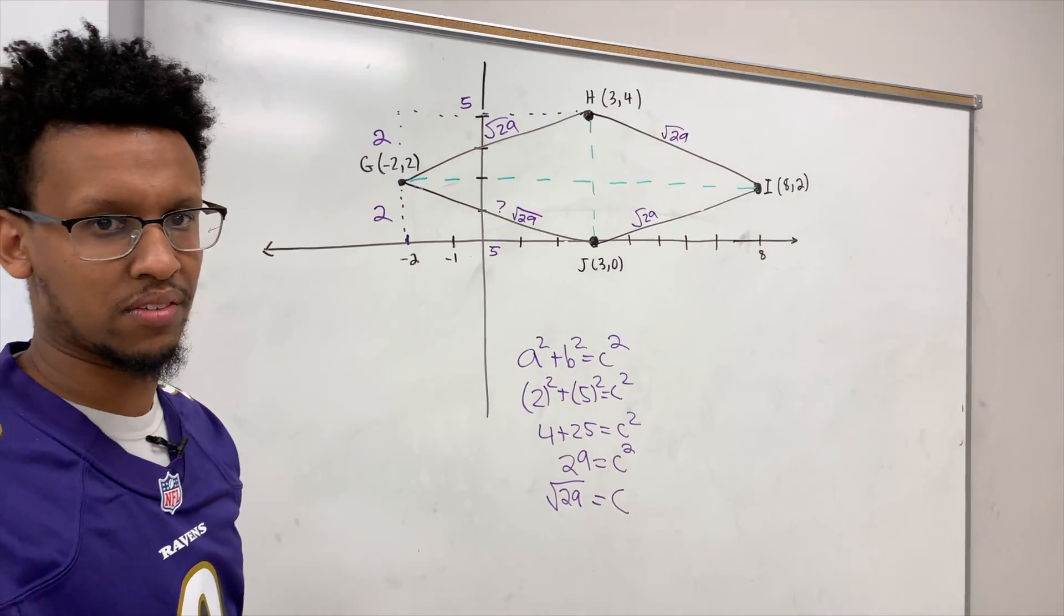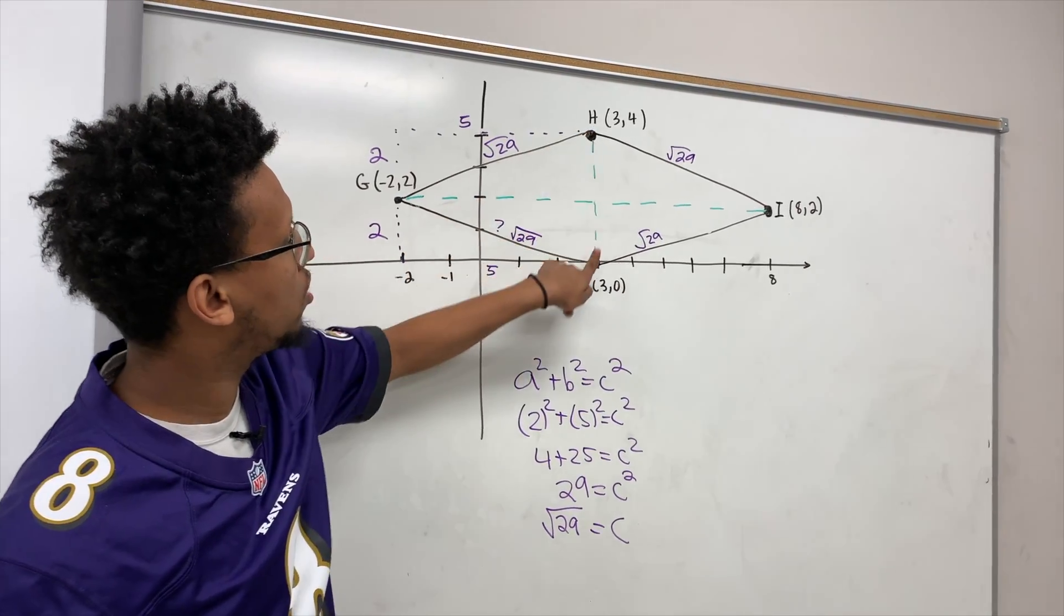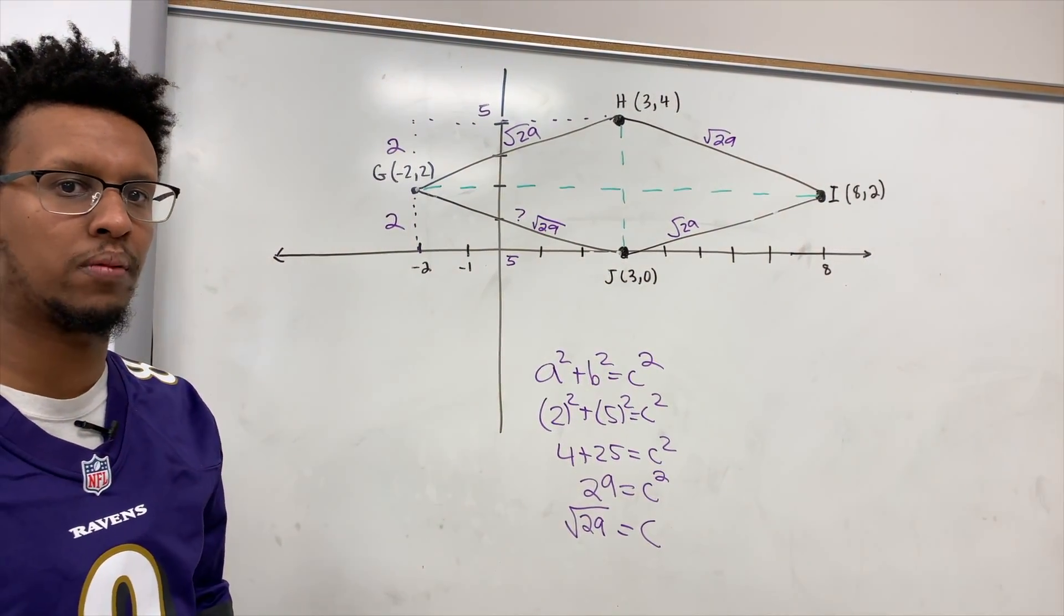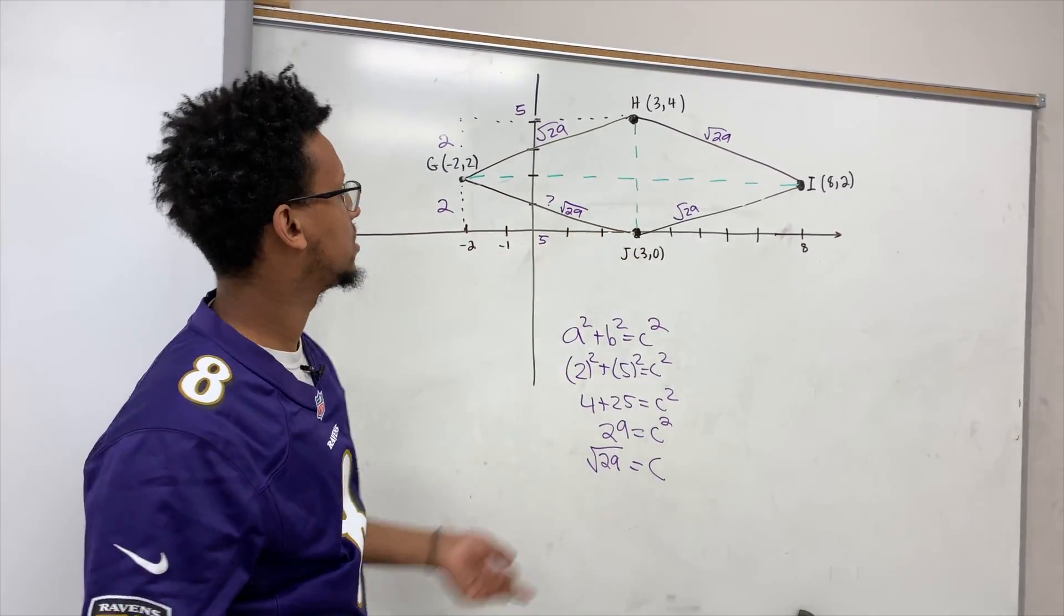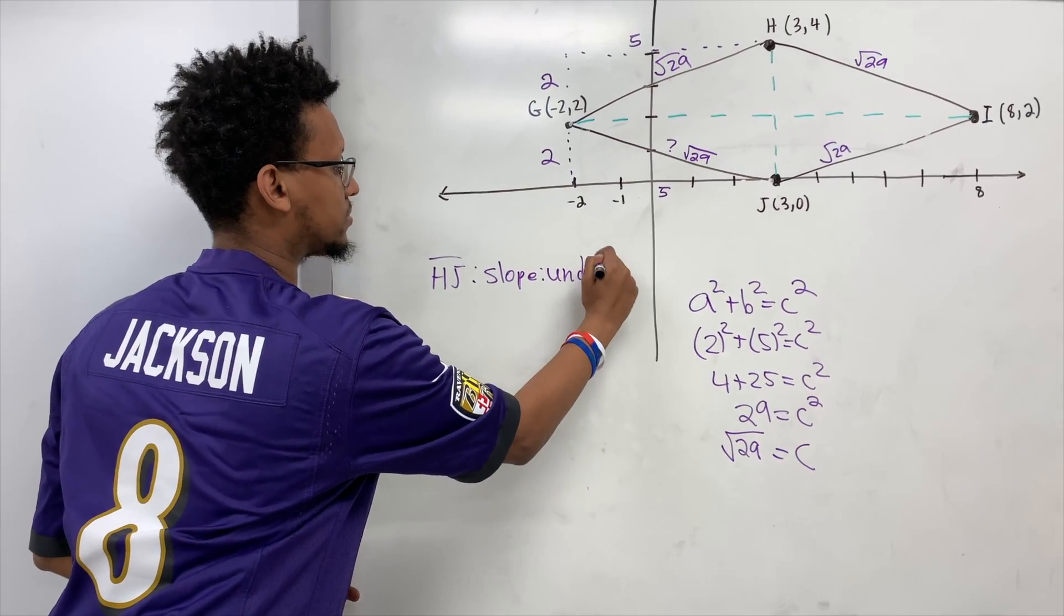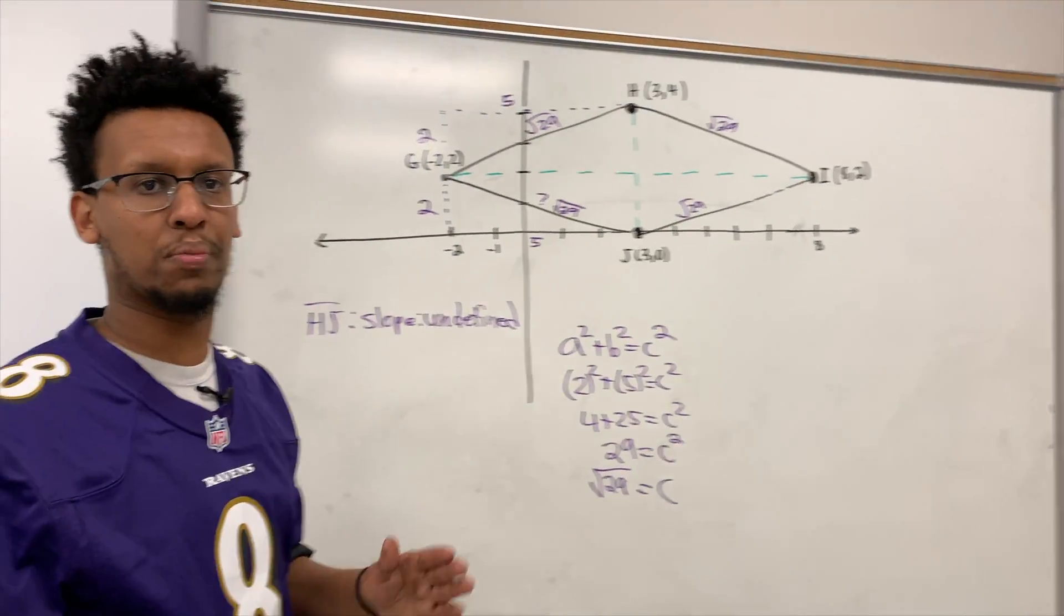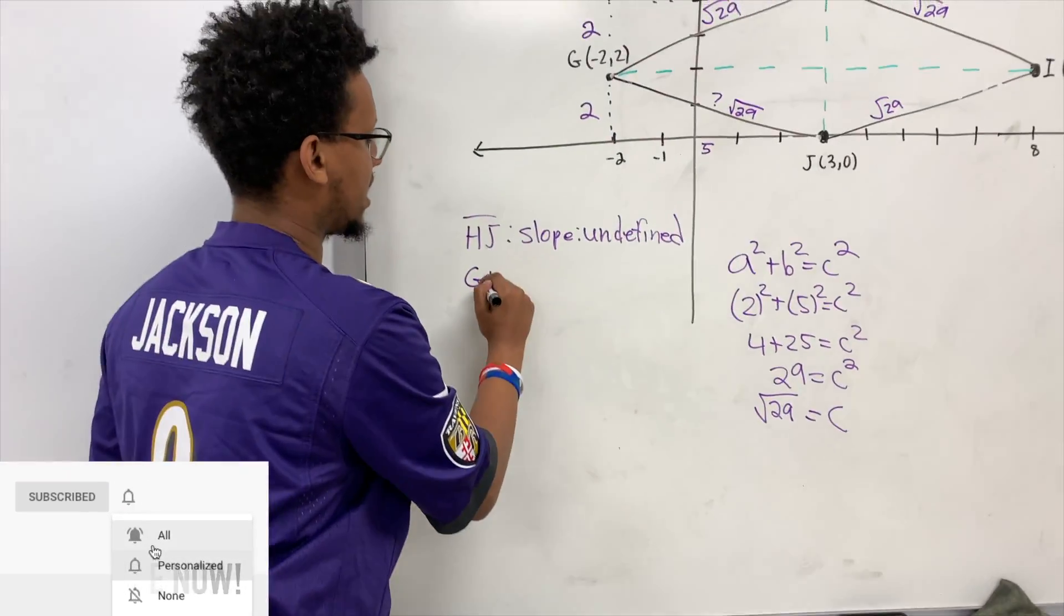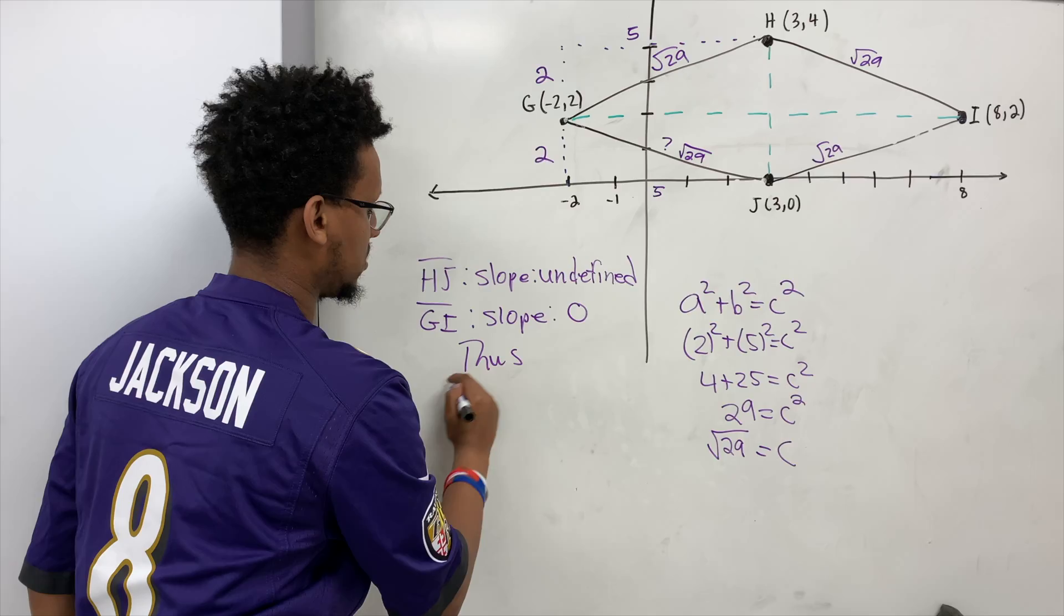So something about diagonals of a rhombus is the fact that they're perpendicular. And to prove that, we need to show that this slope is the opposite reciprocal of this slope. But I hope you see that we're running into a problem because whenever you have a line segment that is vertical, the slope is undefined. So for HJ, my slope is undefined. And then my slope for GI, it's horizontal, it's zero because it's completely flat. So GI, the slope is zero, thus perpendicular.